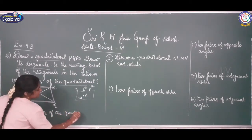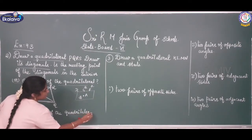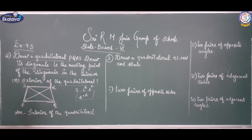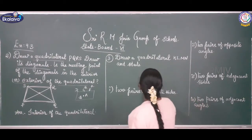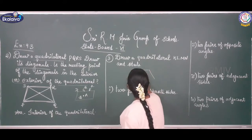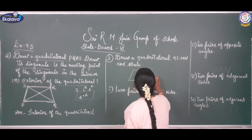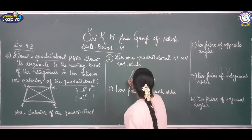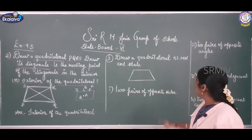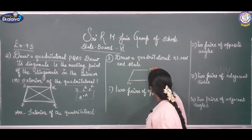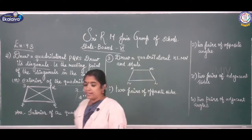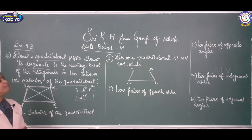Can you understand this, children? Shall I move on to the next sum? Draw a quadrilateral K, L, M, N. A quadrilateral has 4 sides, 4 vertices, and 2 diagonals. Is it clear?